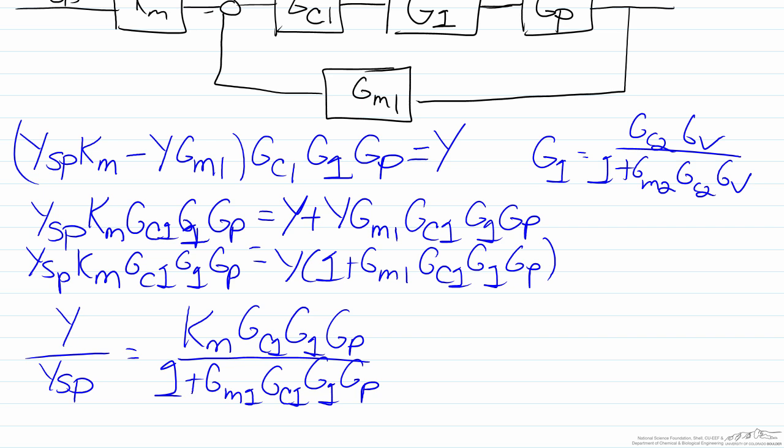At first glance this transfer function doesn't look terrible, but the one problem here is that G1, which is present in both the numerator and the denominator, is its own transfer function, which has a little bit of complexity to it.